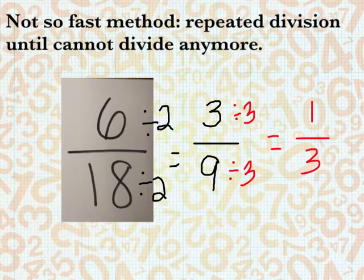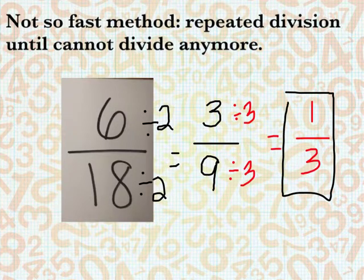9 divided by 3 is 3, and I look: can I divide 1 and 3 both by a number? Well, we know that 1 is as simplified as it can be, so that would be my final simplified fraction.